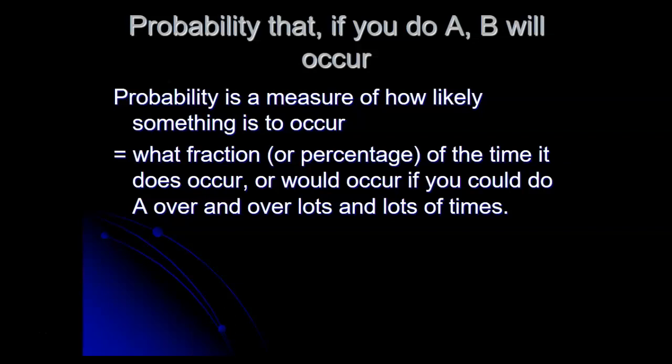And you can think of the probability number as representing what fraction of the time or what percentage of the time that thing does occur, or what percentage of the time it would occur if you could do A over and over again, lots and lots and lots of times.